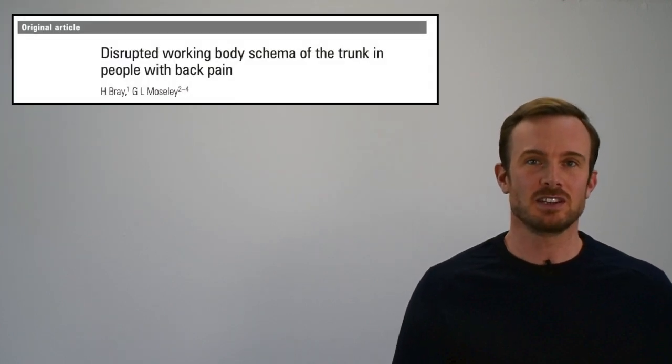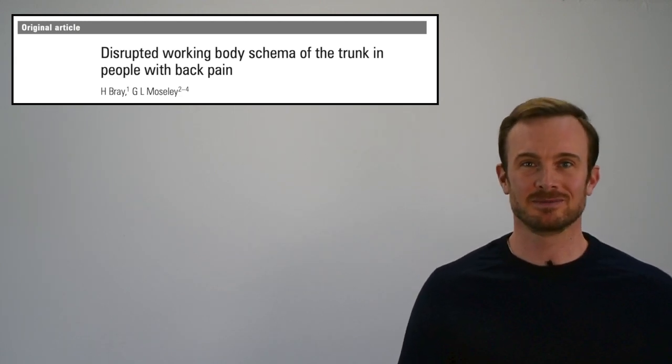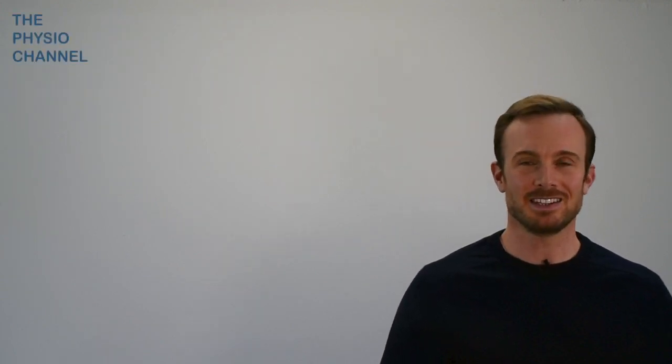Chronic back pain was also associated with disruption of the working body schema of the trunk in a later study by Bray and Mosley. The authors commented that this might be an important contributor to motor control abnormalities seen in this population.